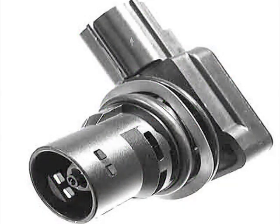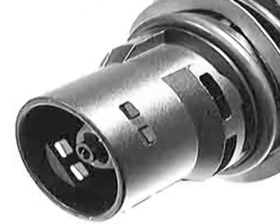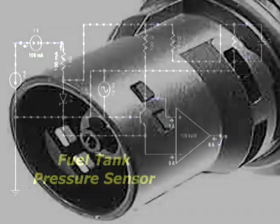The fuel tank pressure sensor is used by the ECM to run the evap monitor by sealing the fuel vapor evap system and testing for a vacuum or pressure drop.